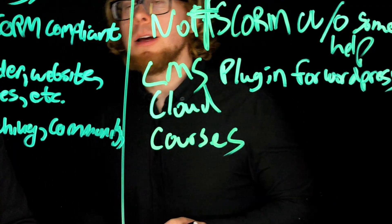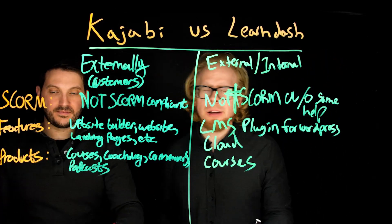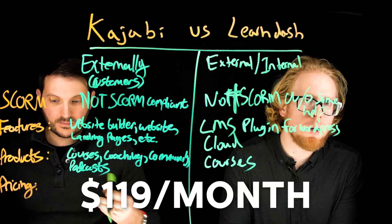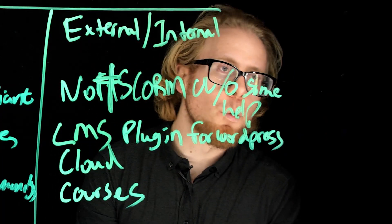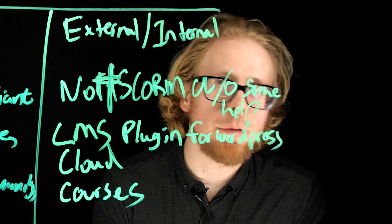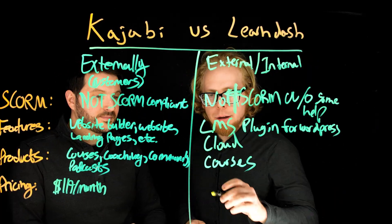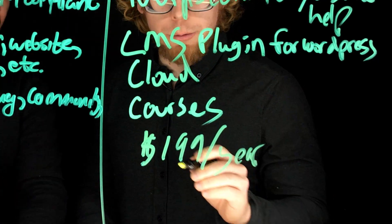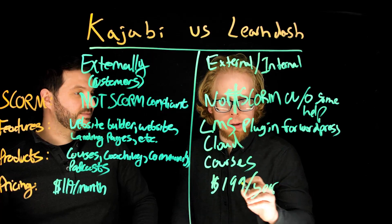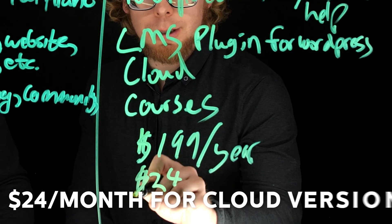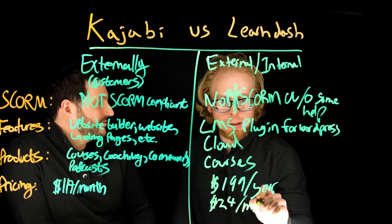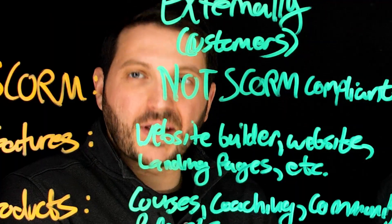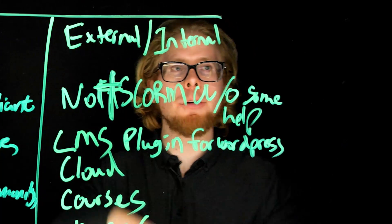Now let's look at pricing, because this is vastly different. Kajabi starts at $119 a month if you buy it annually. LearnDash on the other hand is $199 a year for the WordPress plugin, or $24 a month for the Cloud version — so it is a lot less expensive than Kajabi, but it also does significantly less.